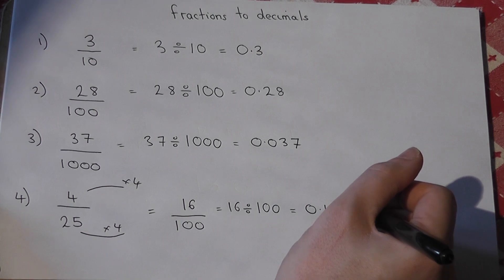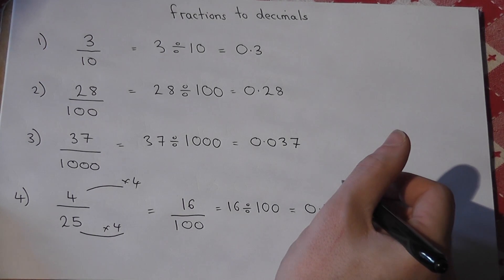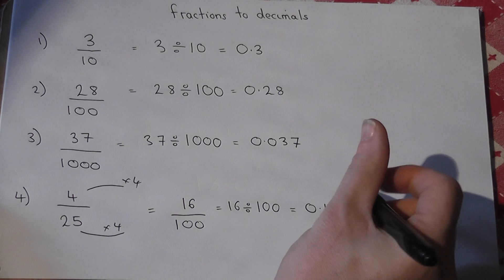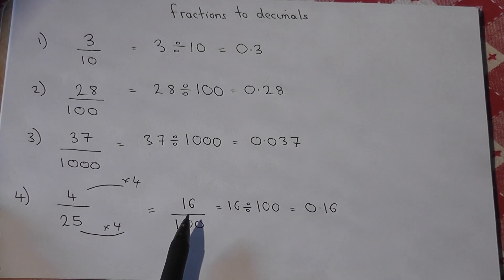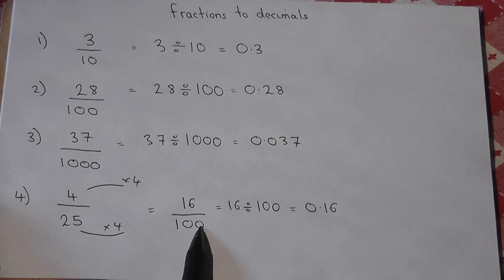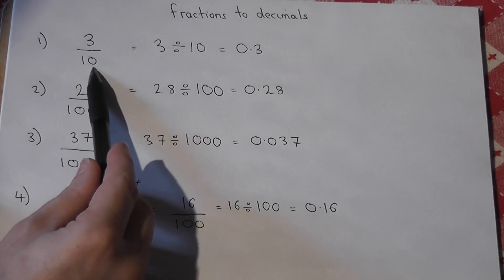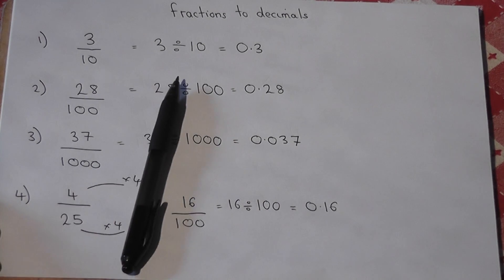So to convert a fraction to a decimal, we first of all, if possible, convert to a nice fraction, and then move the number by either two places or three places or one place as required.